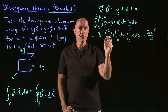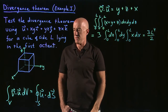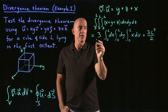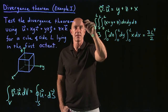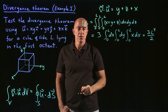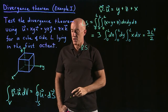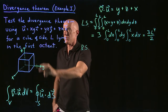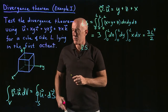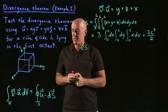So 3l⁴/2 is the left-hand side of the divergence theorem — the integral of del dot u dV over the volume. Now for the right-hand side, we need u dot dS. We have the vector field u already; we just need dS for each face. There are 6 surfaces to integrate over — the 6 sides of the cube.